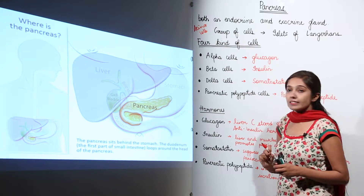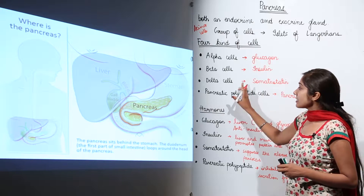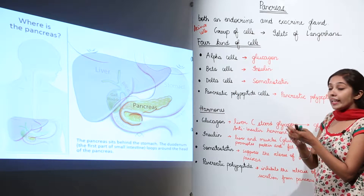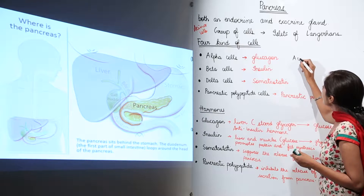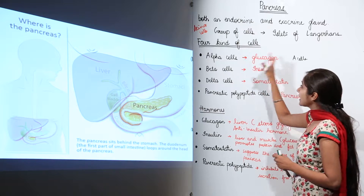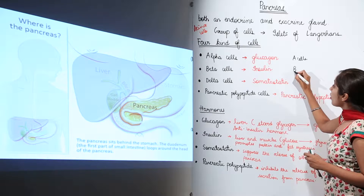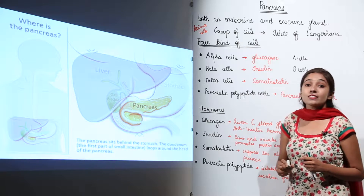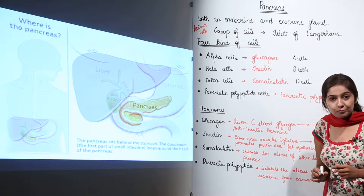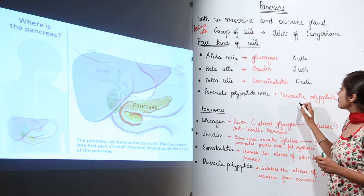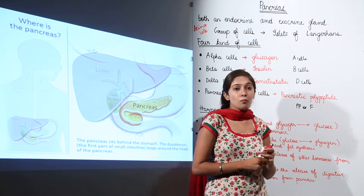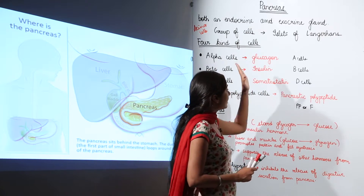There are basically four kinds of cells in the islets of Langerhans: alpha cells, beta cells, delta cells, and pancreatic polypeptide cells. The alpha cells, also called A cells, secrete the hormone glucagon. The beta cells, also called B cells, secrete the hormone insulin. The delta cells, or D cells, secrete the hormone somatostatin. The pancreatic polypeptide cells, also called PP cells or F cells, secrete the hormone pancreatic polypeptide.